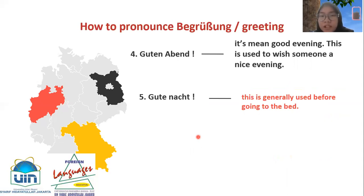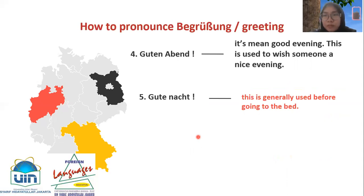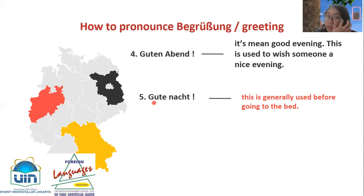'Guten Abend' is used from late afternoon until around Maghrib or Isha time. Next, there's 'Gute Nacht', meaning 'good night'. This is generally used before going to bed, for someone who is about to sleep.